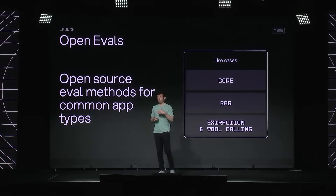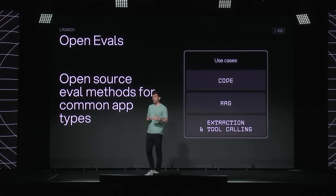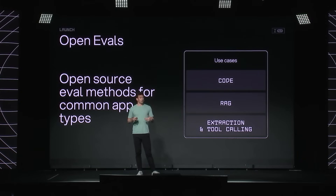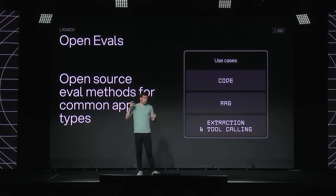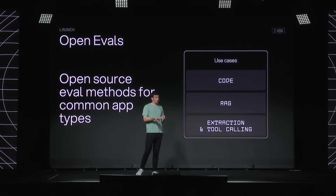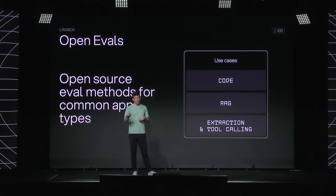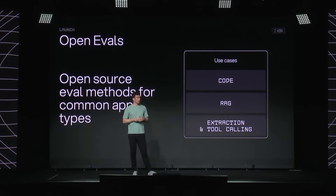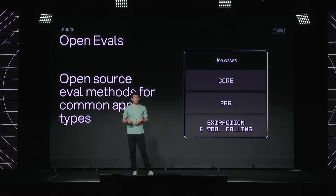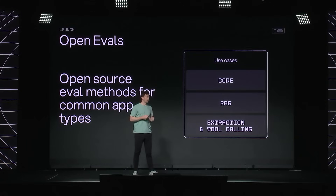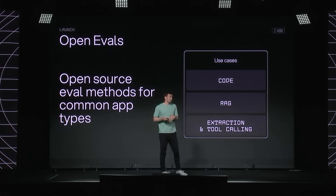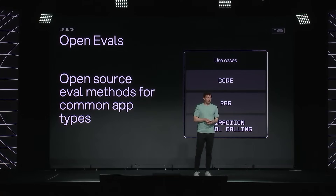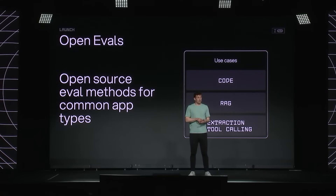One of the things we've been building over the past month or so is a set of open source evaluators to make it easy to get started. There are a few common use cases you can use off the shelf — including code, RAG, extraction, and tool calling. For code, for example, we have off-the-shelf utils that will lint Python or TypeScript code and feed those errors back into the LLM. These are great — you can use them off the shelf with little configuration needed. But of course, for a lot of use cases you're going to want to configure evaluators to your specific use case and domain.